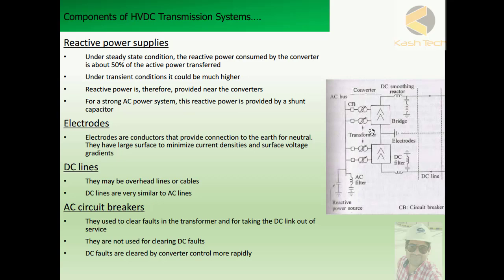If there is a fault on the DC side, you can see there is no breaker installed — DC faults are cleared by the converter control system. Here you can see the electrode, which is installed and creates a common reference point for the DC network. You can also see the transmission line and the smoothing reactor. These are the components we have discussed for our DC system.